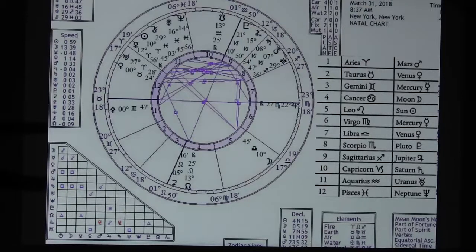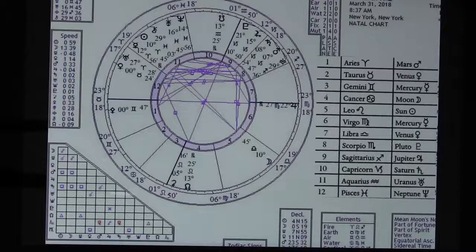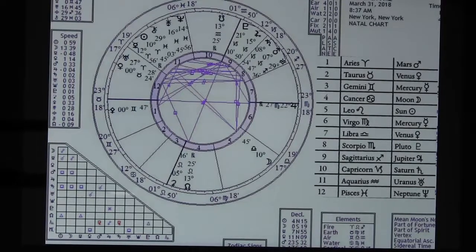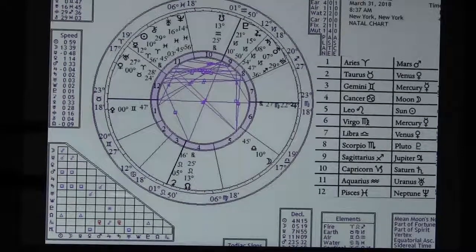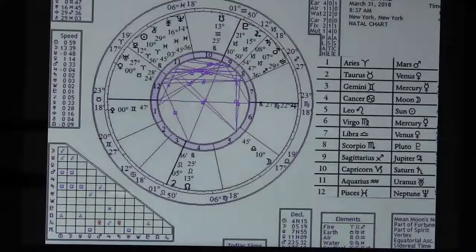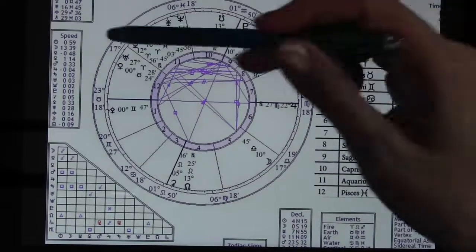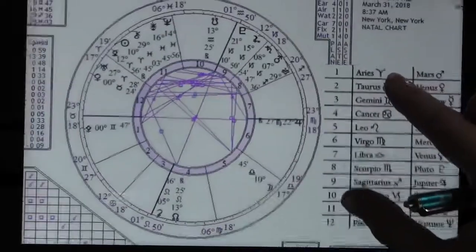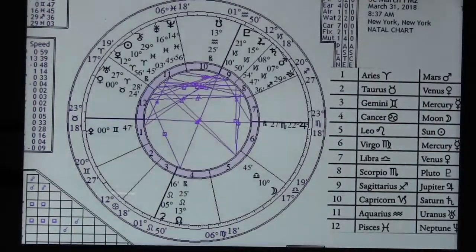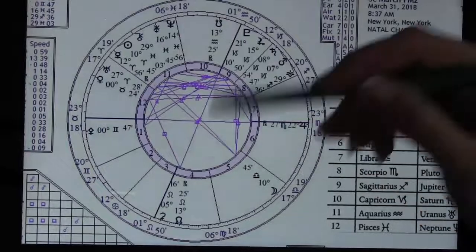Hi everyone, thanks for joining me for the full moon in Libra, happening on March 31st at my dad's birthday at 8:37 a.m. Eastern. Now that I've got the right chart out, I was looking at a completely different chart.